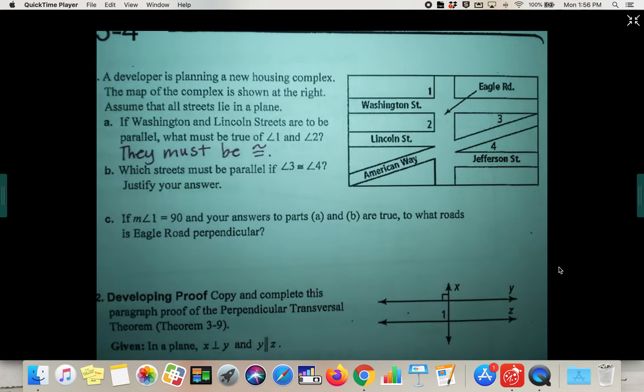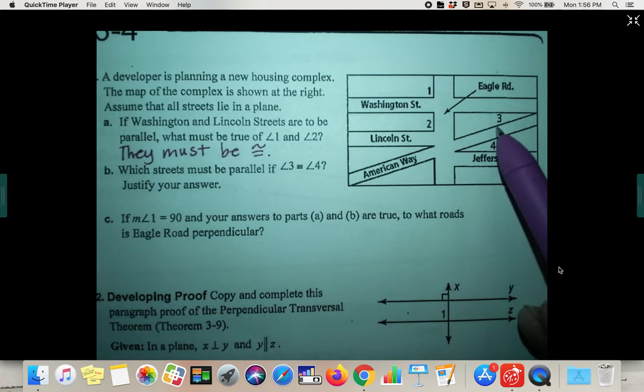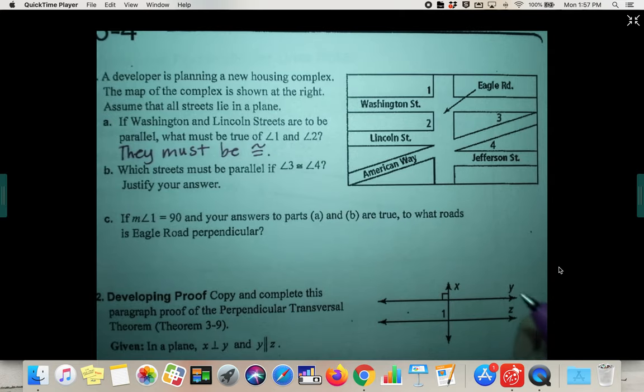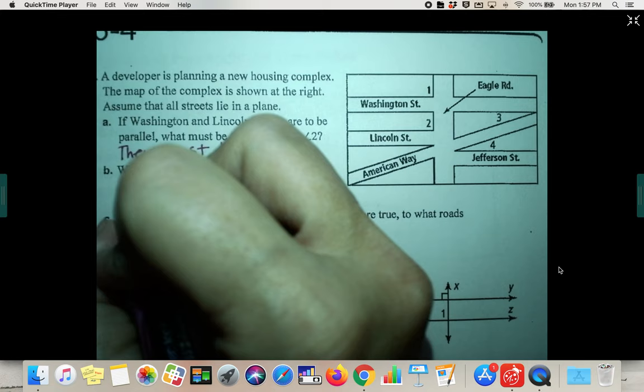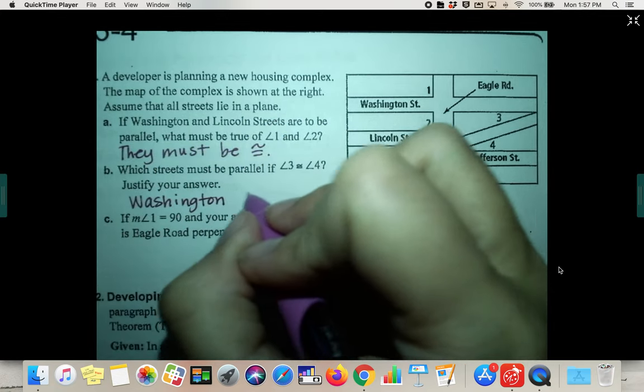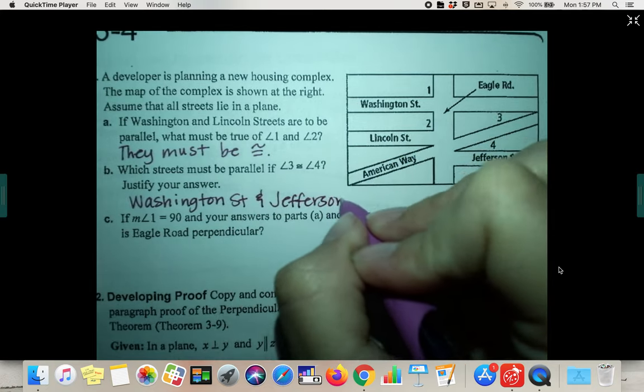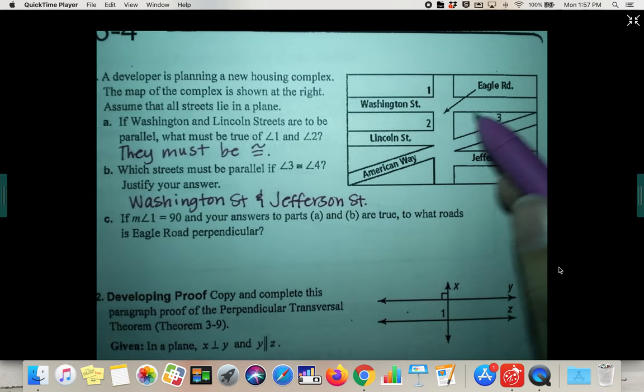Alright, what about B? Which streets must be parallel if angle three and angle four are congruent? So again, three and four would be alternate interior with the transversal here if these two streets are parallel. So those two streets are called, I believe that's part of Washington. So Washington Street and Jefferson Street.